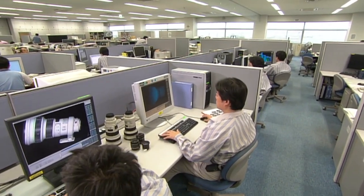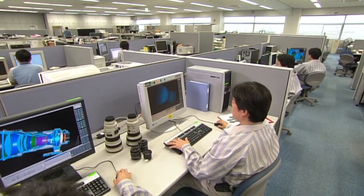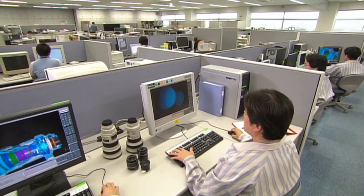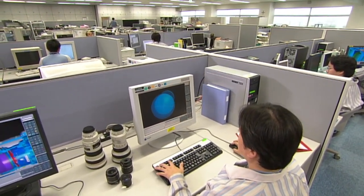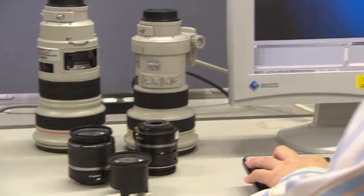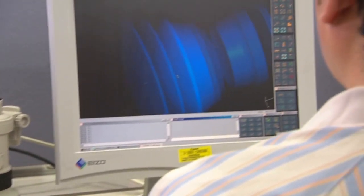Canon's ideal lens is one that projects focus points as true points, free of blurred images, distortion, and color bleeding. To achieve this goal, Canon has been working to solve the problem of aberrations.